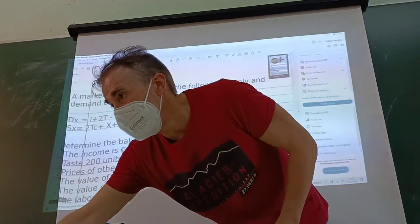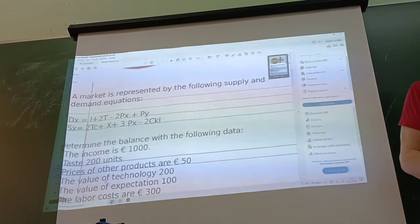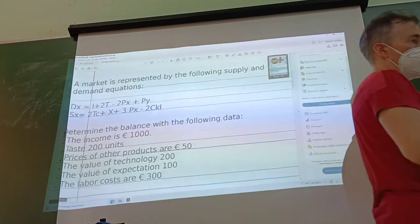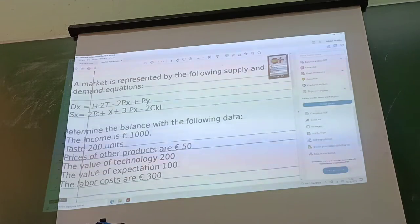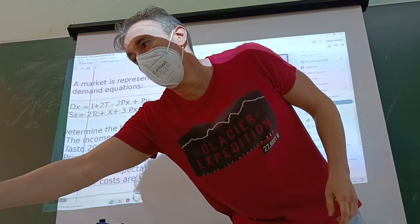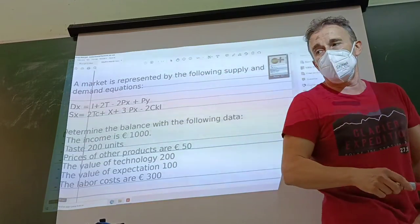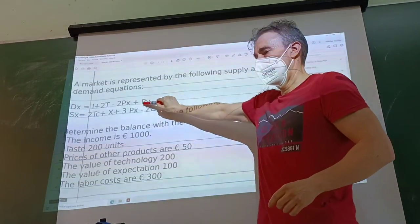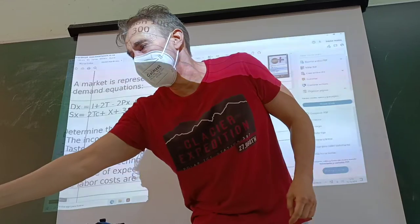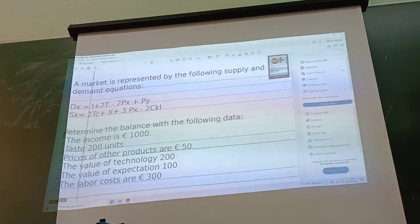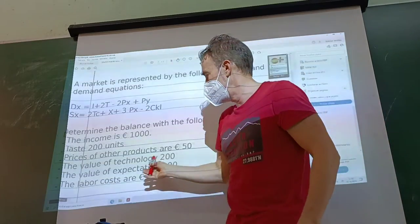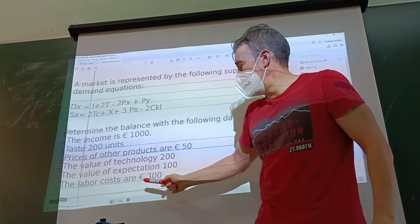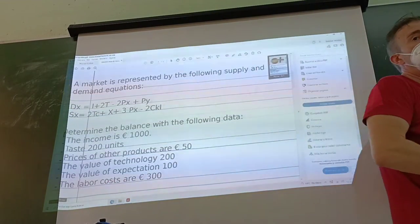Now, determine the equilibrium with the following given values. Income is 1000 euros. Taste is 200 units. Prices of other products is 15 euros. The value of technology is 200 units. The value of the expected price is 100 units. And the labor cost is 300 units.